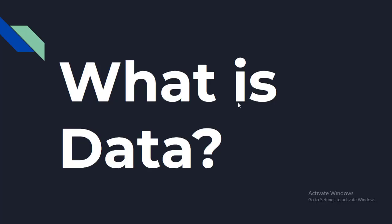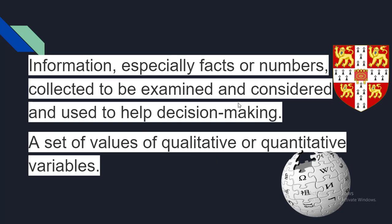Now let's look at what exactly data is. The Cambridge English Dictionary states that data is information, especially facts or numbers collected to be examined and considered and used to help decision making. Wikipedia defines it as a set of values of qualitative or quantitative variables. Both agree that data is values, numbers, or facts. The Cambridge definition focuses on the actions surrounding data — it is collected, examined, and used to inform decisions.